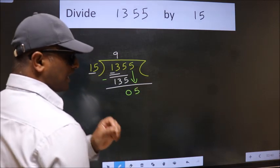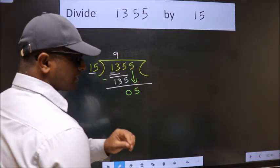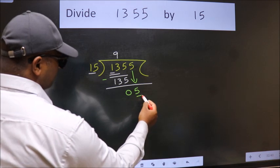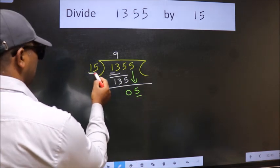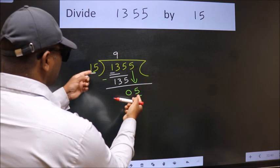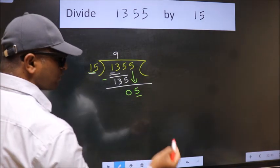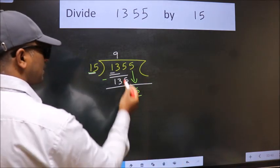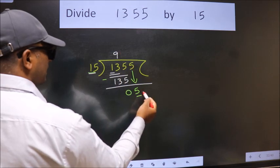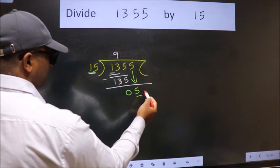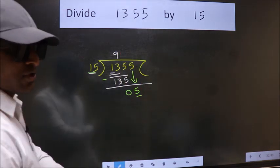And the mistake is this: here we have 5, here 15. 5 is smaller than 15, so what many do is they directly put dot, take 0, which is wrong.